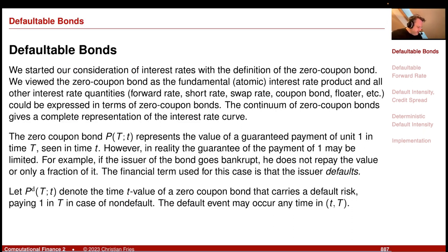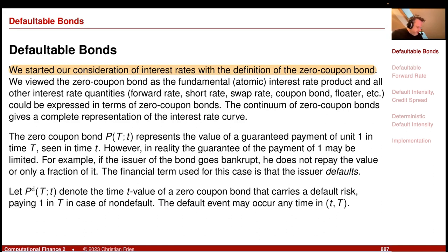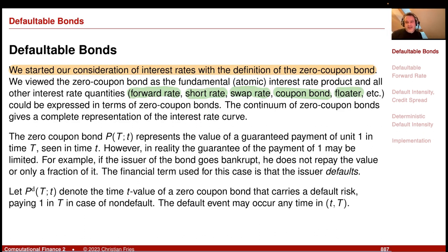We already encountered defaultable bonds. We started our considerations of interest rates with the definitions of zero-coupon bonds that guarantee the payment. The zero-coupon bond was our fundamental atomic object from which we derived quantities — for example, forward rates, short rates, swap rates, coupon bonds. We could value coupon bonds, floaters, forward rates paid in a financial product, and so on. Later we had the comment that the green things are what we observe — for example, we observe a swap value or a par swap rate — and then we can infer the underlying zero-coupon bonds that create these observed objects.